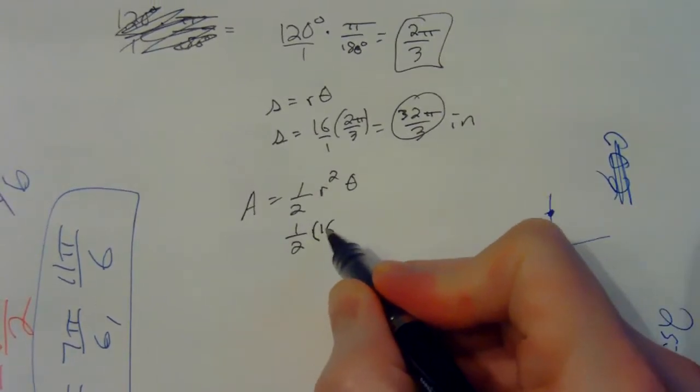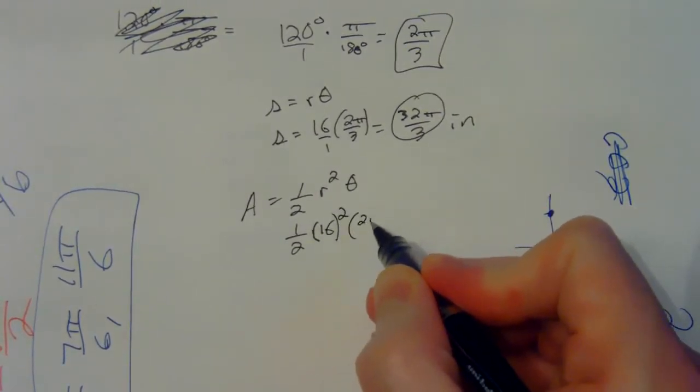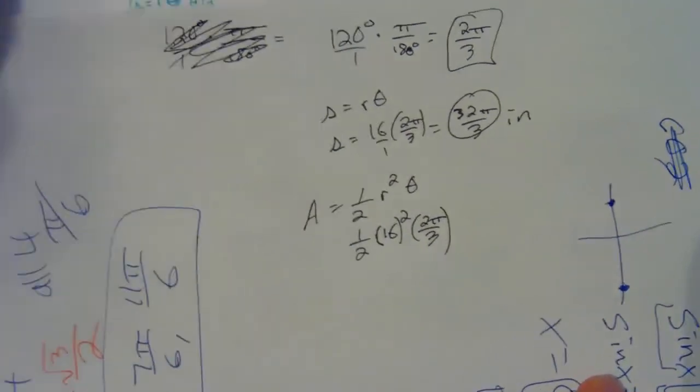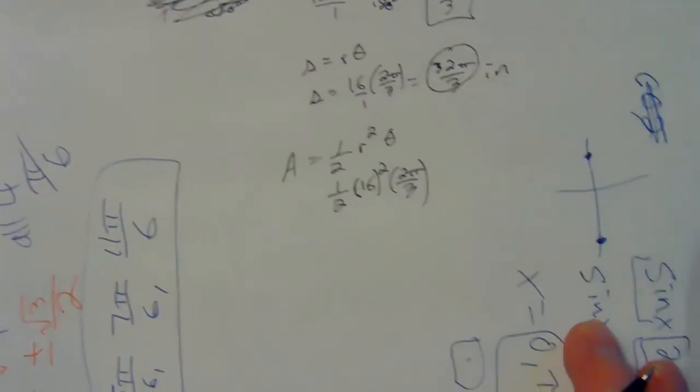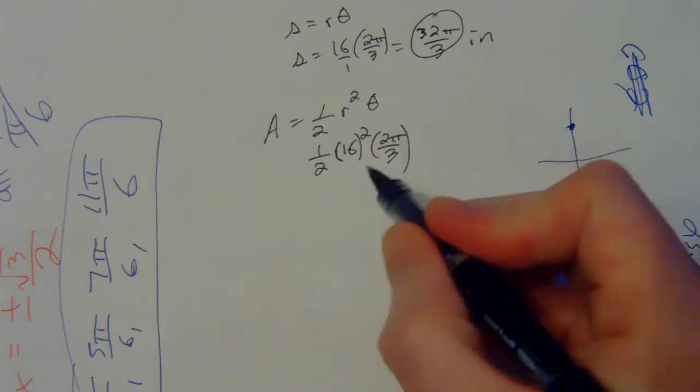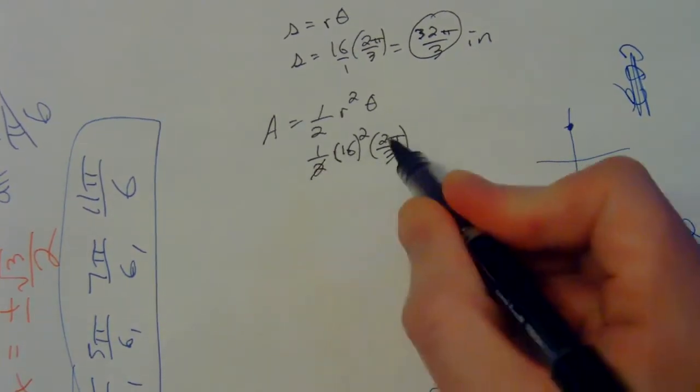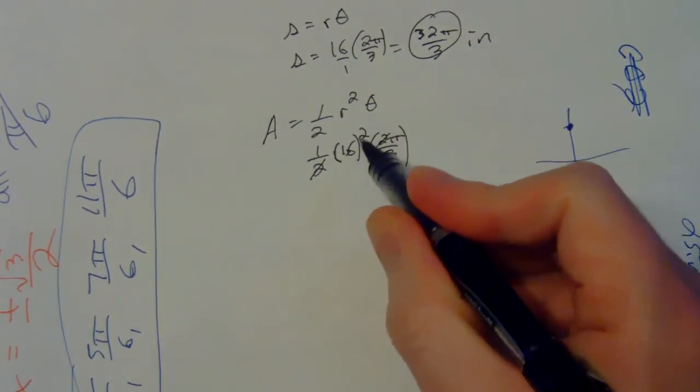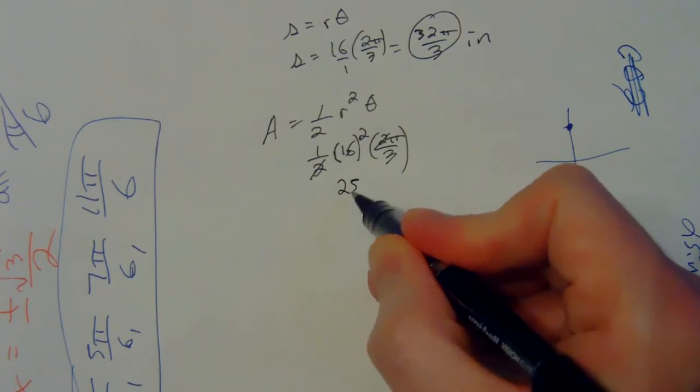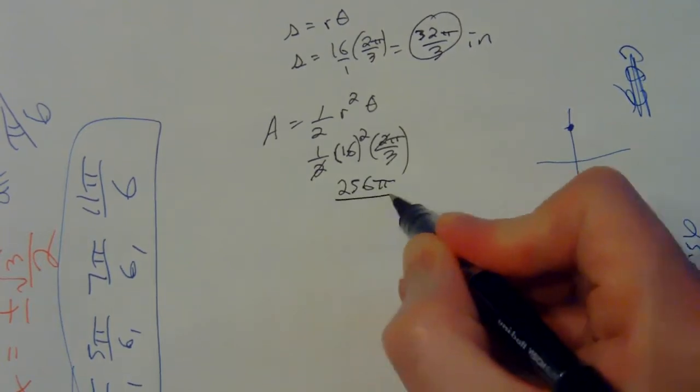So you're going to go one half times your r squared times the two pi over three. And then just plug all that stuff into the calculator. I know 16 squared is going to be 256. I realize that those twos are going to cancel, 16 squared is 256, the pi is still there, and then the three is still there.